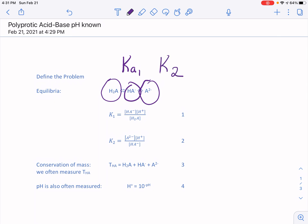So you'll notice in equation one, I have defined K1, products over the reactants, it's HA- times H+ over H2A. Similarly, I've defined K2, A2- times H+ over HA-, so these are my two equilibrium expressions for the first and second dissociation.